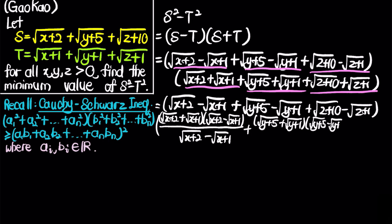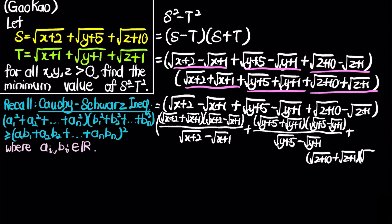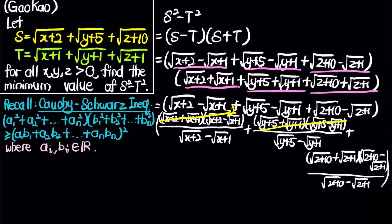For each group, multiplying out using the difference of two squares formula, the first numerator simplifies to (x+2) − (x+1) = 1, the second to (y+5) − (y+1) = 4, and the third to (z+10) − (z+1) = 9.